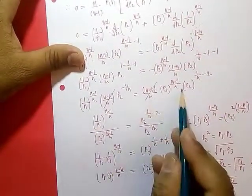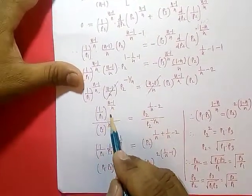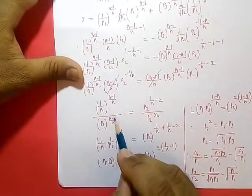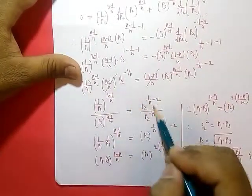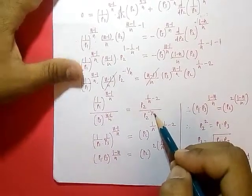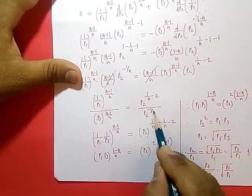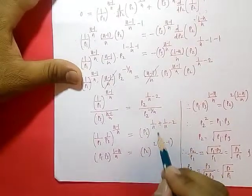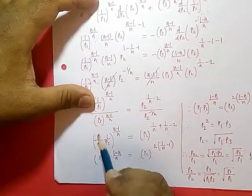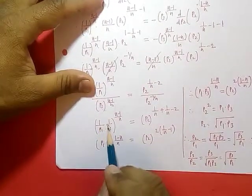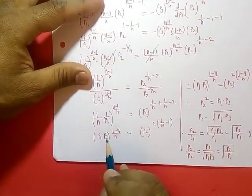Collecting p2 terms to one side and the rest to the other side, we get (1/p1)^((n-1)/n) on one side and (p3)^((n-1)/n) on the other. Writing 1/p2 as p2^(−(n-1)/n) and taking the derivative, we get exponent [1/n + 1/n − 2] = [2/n − 1], which simplifies. Writing (1/p1)·(1/p3) with common power (1 − n)/n, this equals p2 raised to 2·(1 − n)/n.